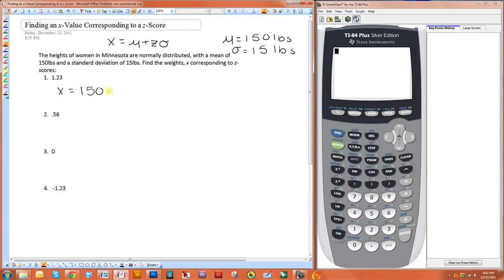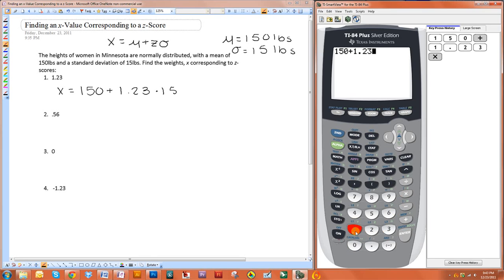So 150 plus 1.23 times 15 equals 168.45 pounds.